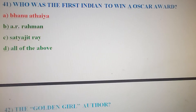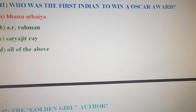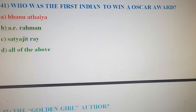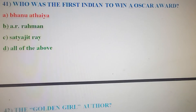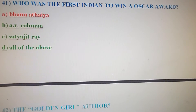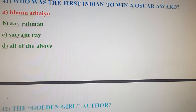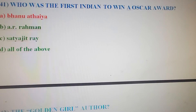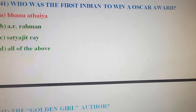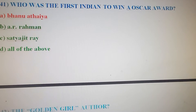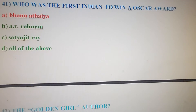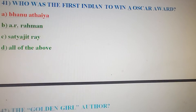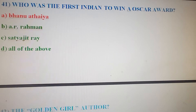Next, 41st question: Who was the first Indian to win an Oscar Award? Option A: Bhanu Athaiya. Option B: A.R. Rahman. Option C: Satyajit Ray. Option D: All of the above. The correct answer is Option A, Bhanu Athaiya.